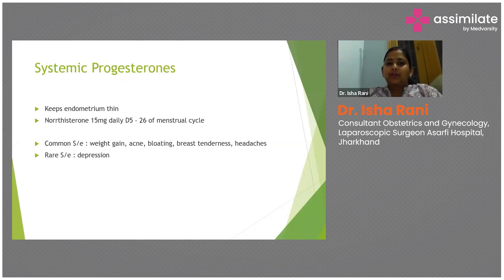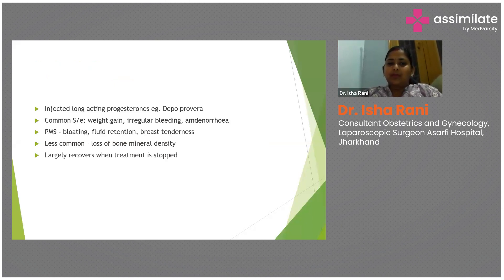Systemic progesterone helps keep the endometrium thin. Norethisterone 15 mg daily is used from day 5 to day 26 of the menstrual cycle. Common side effects include weight gain, acne, bloating, breast tenderness, and headaches, with rare side effects including depression and mood changes.